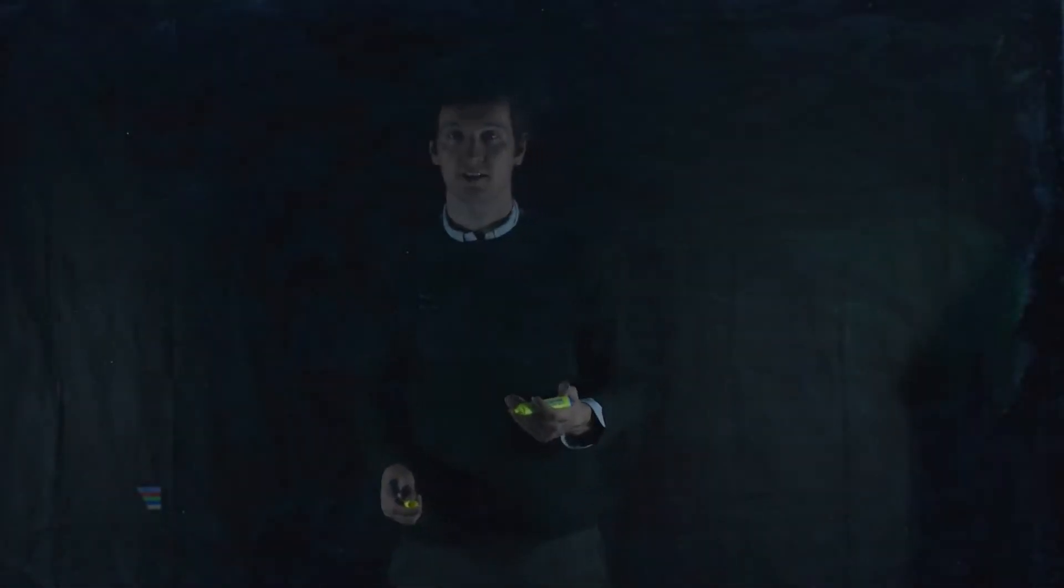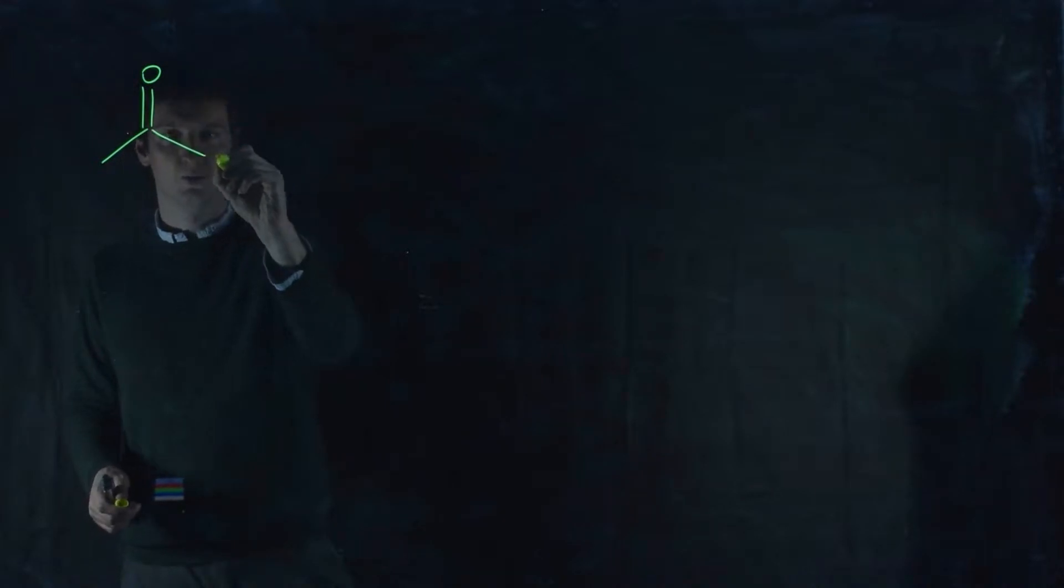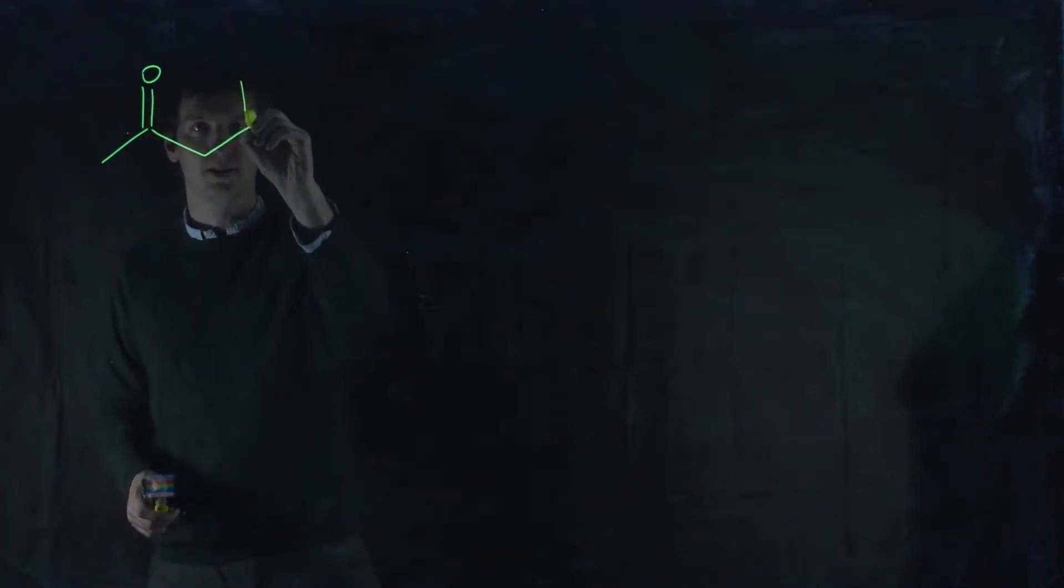Okay, I want to look at a particular type of molecule, and that molecule is a beta-dicarbonyl. So, let me draw out an example. One carbonyl, and then alpha, beta to that, a second carbonyl.